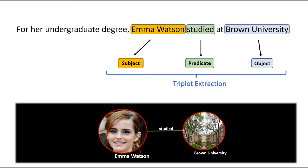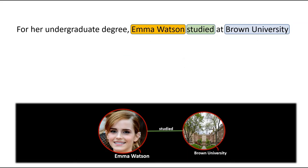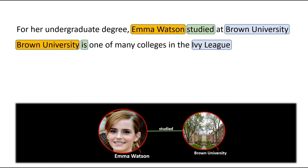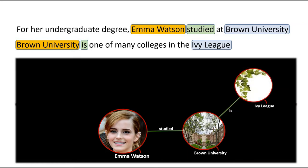By using a triplet extractor, we can represent the triple in a sentence visually — each entity becomes a node and the relationship becomes an arc between the nodes. For example, the sentence 'Brown University is one of many colleges in the Ivy League' gives us Brown University as the subject, 'is' as the predicate, and Ivy League as the object. Ivy League is added as a new node connected to Brown University. Google applies triplet extractors over billions of sentences, and all extracted triplets are connected to form the knowledge graph.